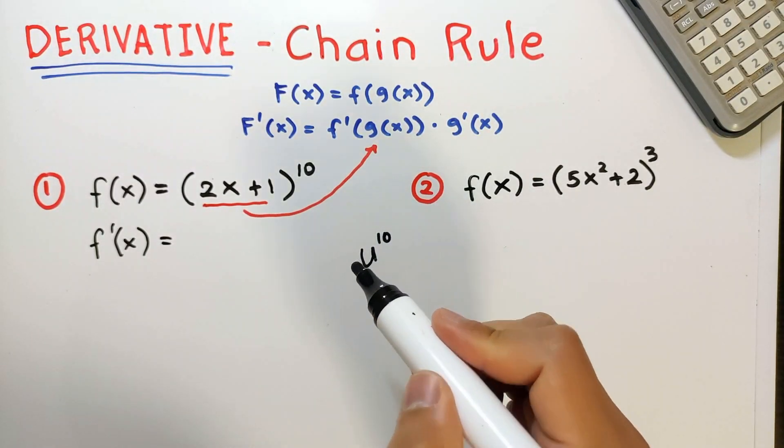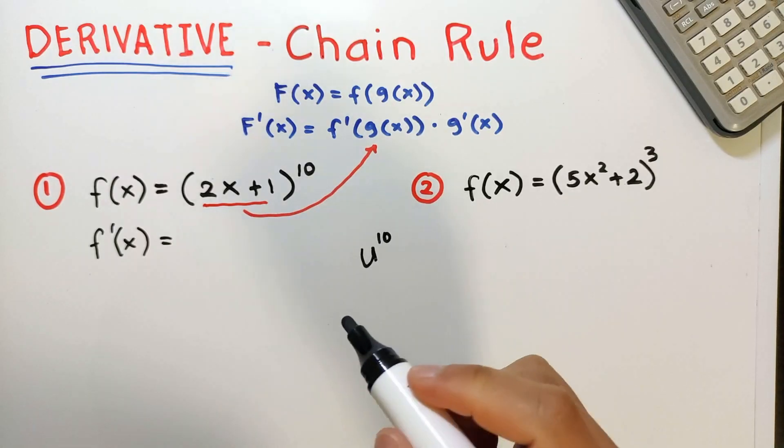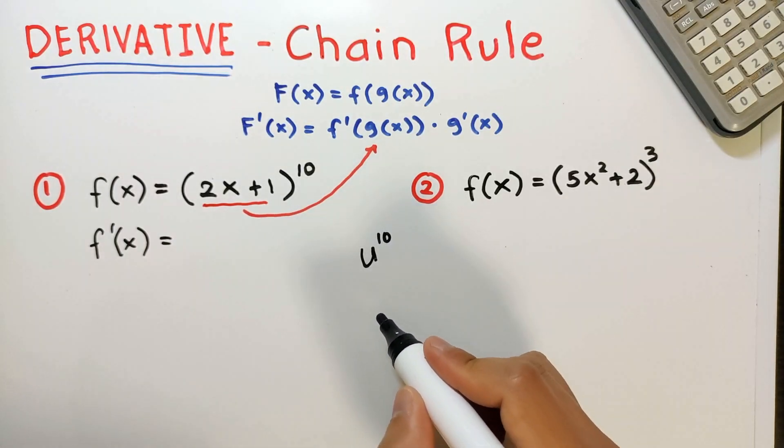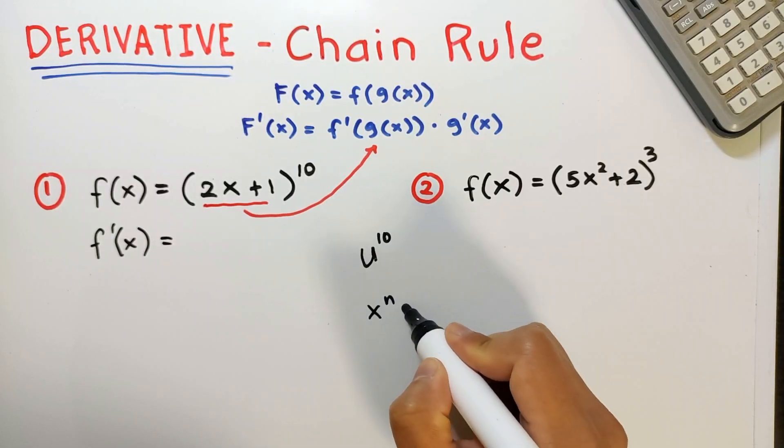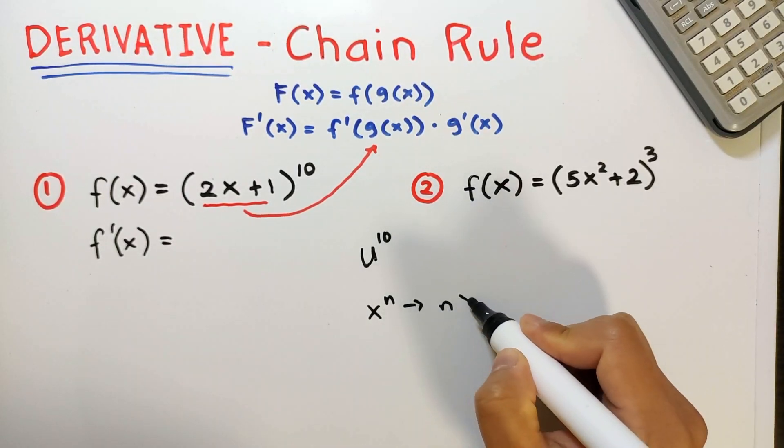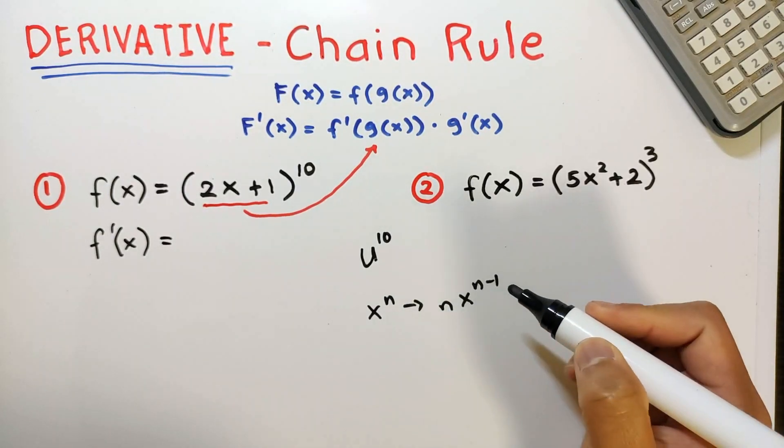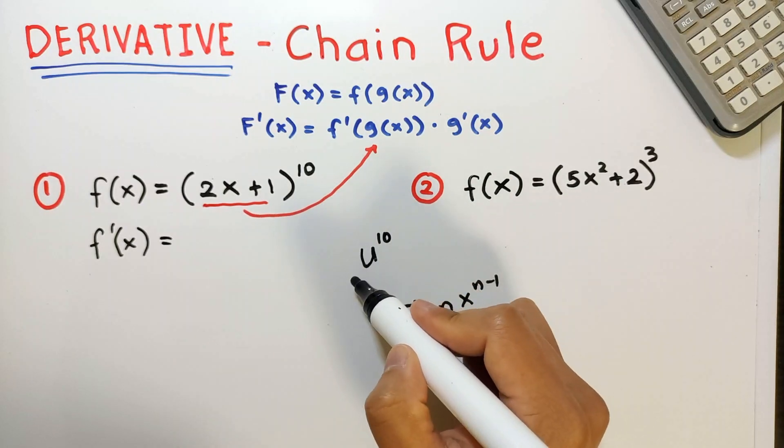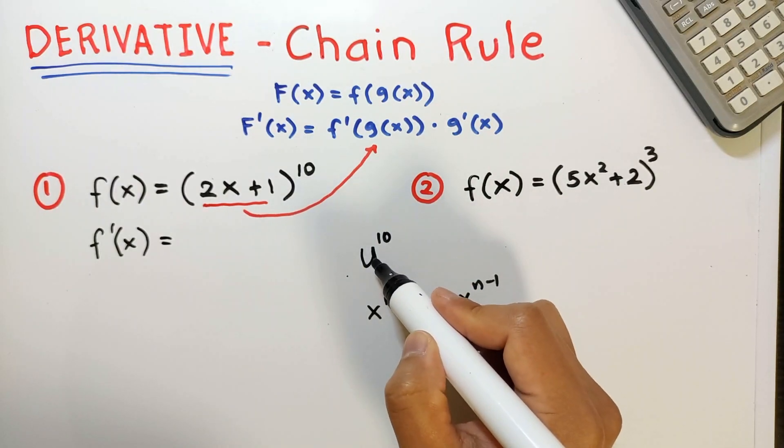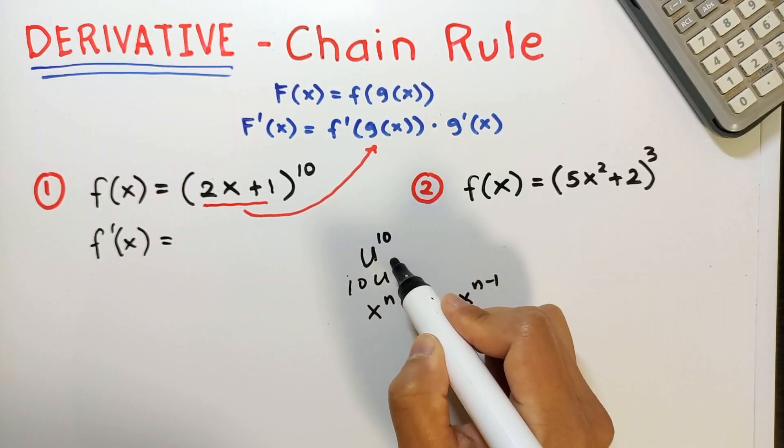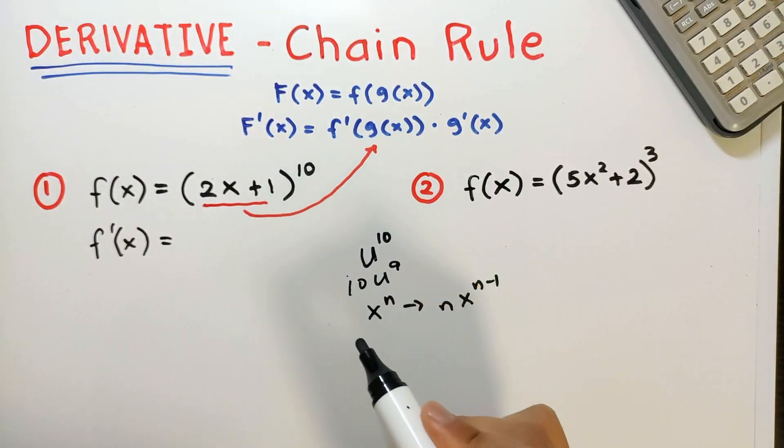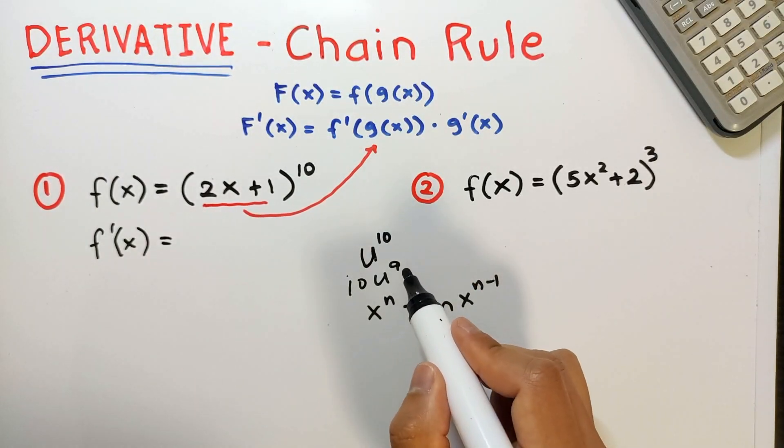To get the derivative, apply the power rule. The power rule states that the derivative of x raised to n is nx raised to n minus 1. So that is bring down 10 as a coefficient, copy the base, and then minus 1 from the exponent. So that's 10u raised to 9.